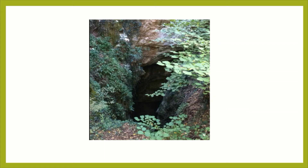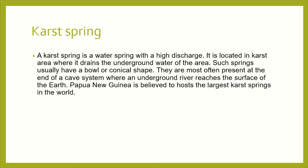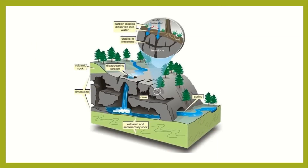Karst spring — a karst spring is a water spring with high discharge. It is located in a karst area where it drains the underground water of the area. These springs usually have a bowl or conical shape and are often present at the end of a cave system where an underground river reaches the surface of the earth.